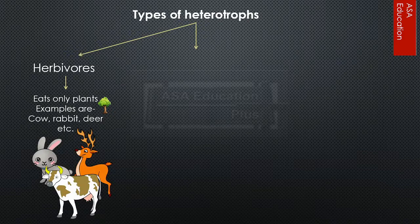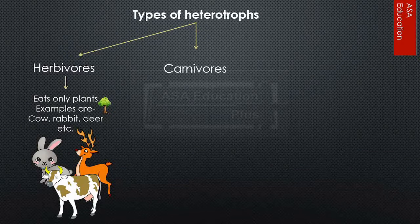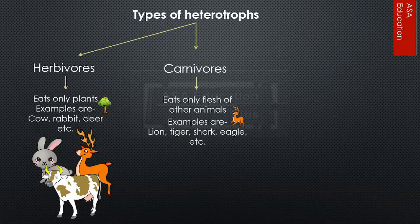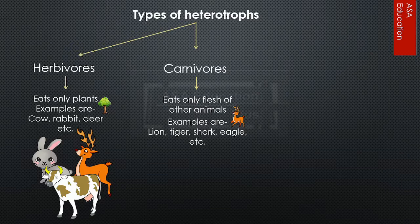Next, carnivores eat only the flesh of other animals. Examples are lion, tiger, shark, eagle, etc.